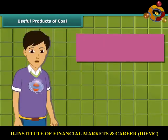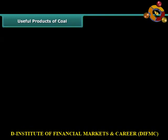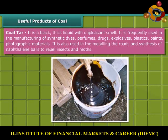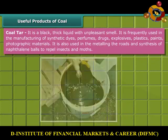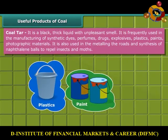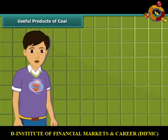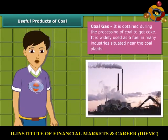Let us know about coke. Coke is a tough, porous, and black-colored substance. In the manufacturing of steel and extraction of many metals, it is mainly used. Coal tar is a black, thick liquid with an unpleasant smell. It is frequently used for manufacturing of synthetic dyes, perfumes, drugs, explosives, paints, plastics, and photographic materials. To obtain coke from coal, coal gas is also produced. In many industries located near coal plants, it is used as a fuel.